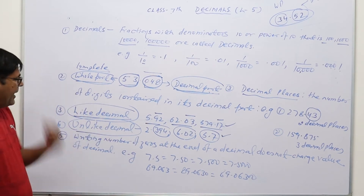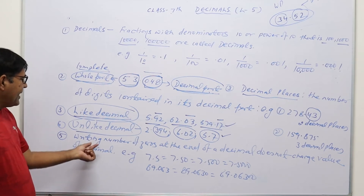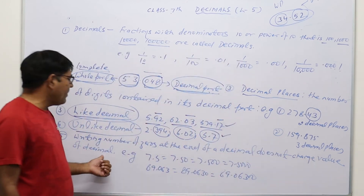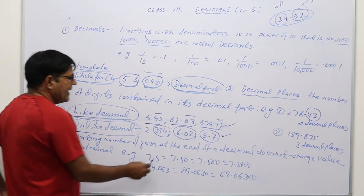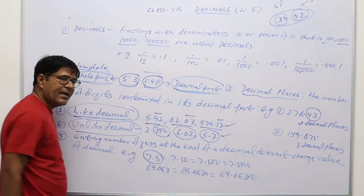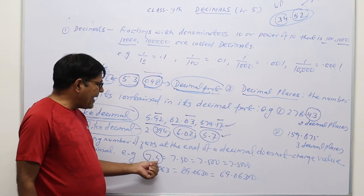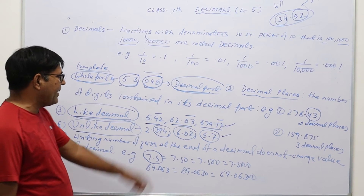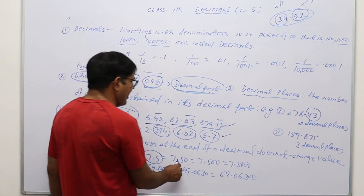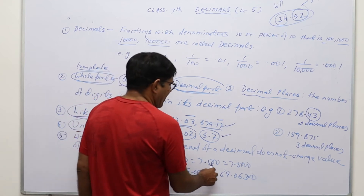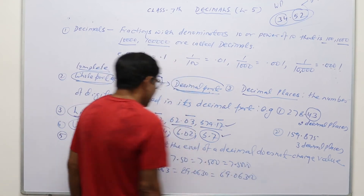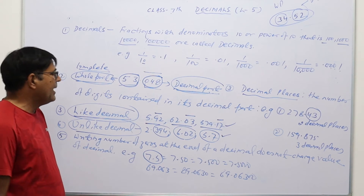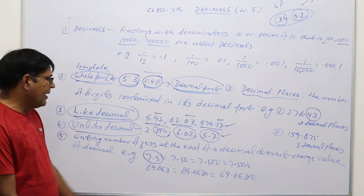Now one more very important point — writing a number of zeros at the end of a decimal does not change the value of the decimal. That means, let us suppose one decimal number is 7.5. Now in any decimal, at the end of the decimal part, if we put a zero — for example, 7.50, 7.500 — then all these decimals will be equal, because adding zeros at the end of a decimal does not change the decimal value.